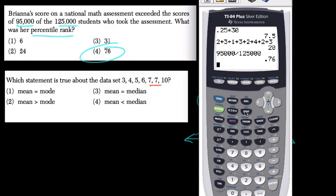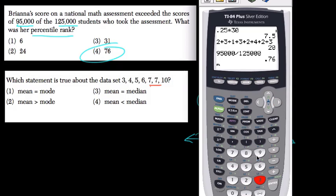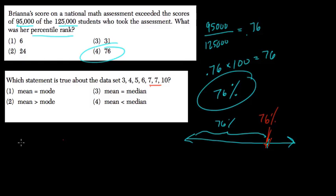So we go to second stat, and here's our math icon. Scroll over to the right, see choice 3 is mean. So I want to find the mean of that list we just made, which is list 1. Hit second 1, and the mean is 6. The mean equals 6.